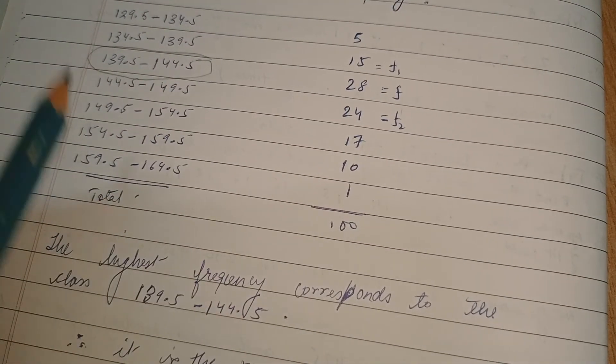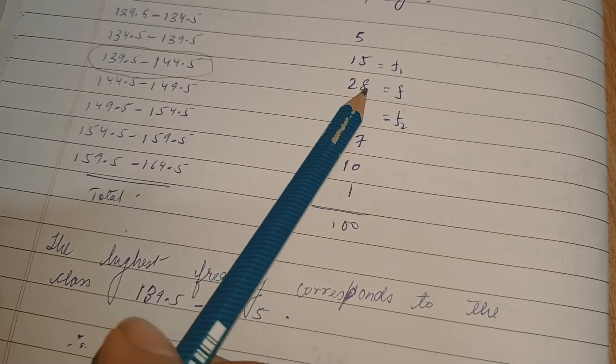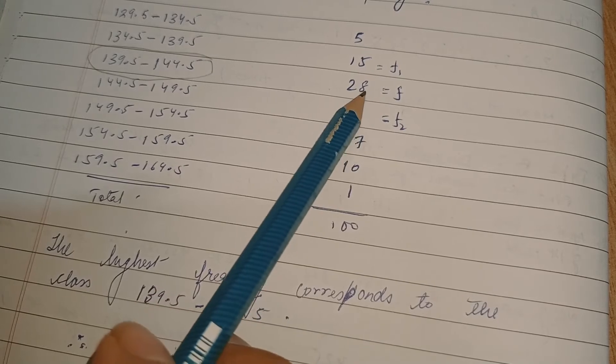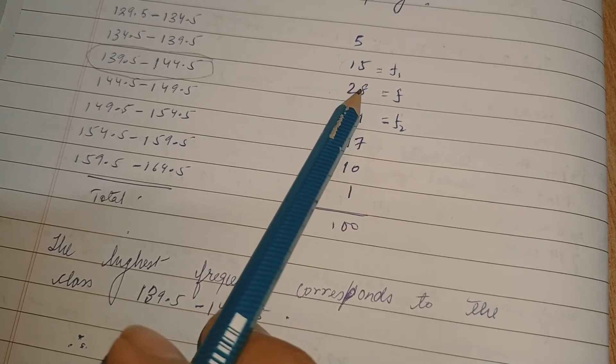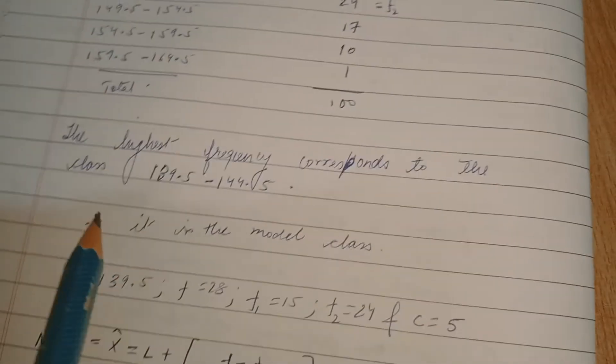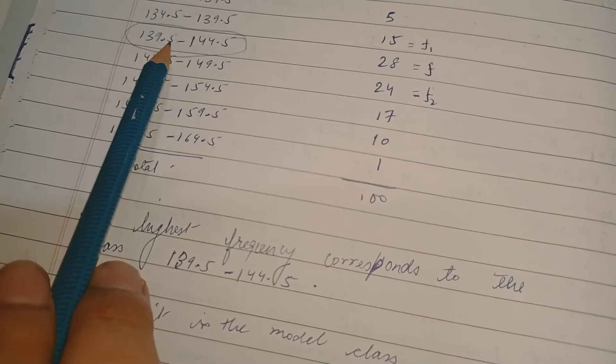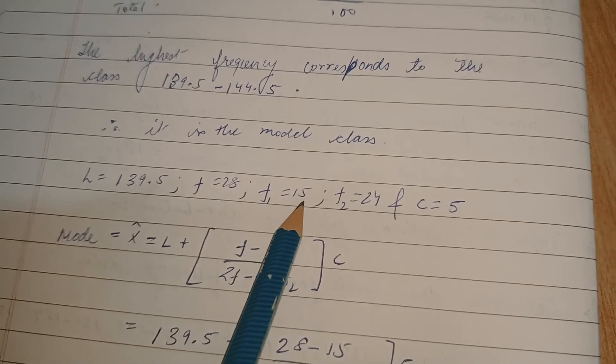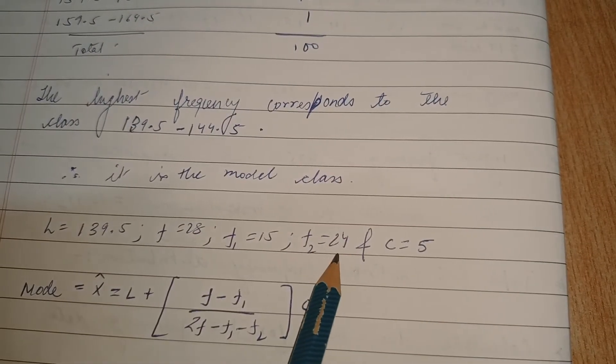This is the model class. Now we read about the symbols, right? F, f1, and f2. What is f? F is the frequency of the model class. This is f. F1 is the frequency preceding the frequency of the model class. This would be f1. And f2 would be the frequency succeeding the frequency of model class, that is 28. 28 is succeeded by 24, so 24 is f2. Now what is l? L is the lower limit of the model class, that is 139.5. What is f? The frequency of the model class, 28. F1 is the frequency which precedes the frequency of model class, and f2 is the frequency which succeeds the frequency of the model class, that is 24.